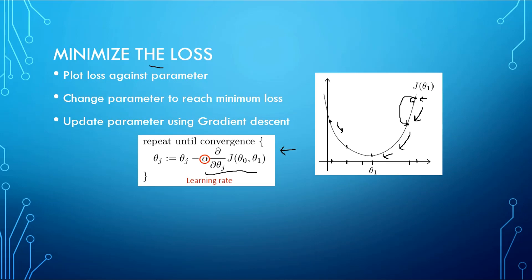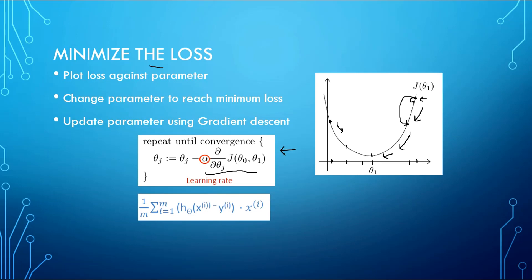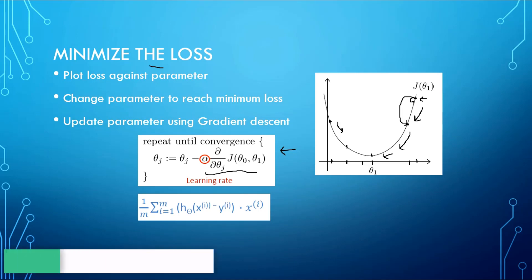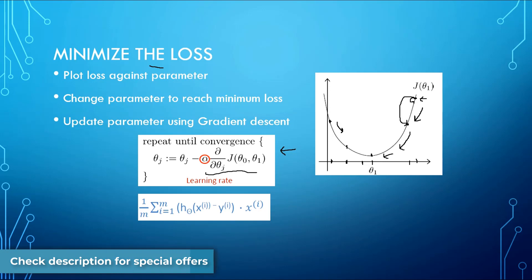The partial derivative of the cost function is given by taking the difference of our predicted value and the actual value, multiplying it with the input, taking a summation over all training examples, and dividing by m. This is the derivative of the cost function computed before.